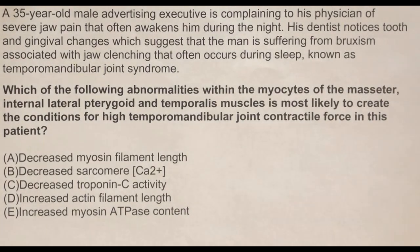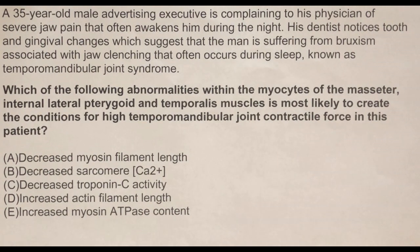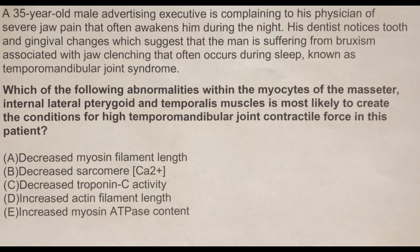Welcome back to Dissect the Question. A 35-year-old male advertising executive is complaining to his physician of severe jaw pain that often awakens him during the night. His dentist notices tooth and gingival changes, which suggest that the man is suffering from bruxism associated with jaw clenching that often occurs during sleep — known as temporomandibular joint syndrome. Which of the following abnormalities within the myocytes of the masseter, internal lateral pterygoid, and temporalis muscles is most likely to create the conditions for high temporomandibular joint contractile force in this patient?